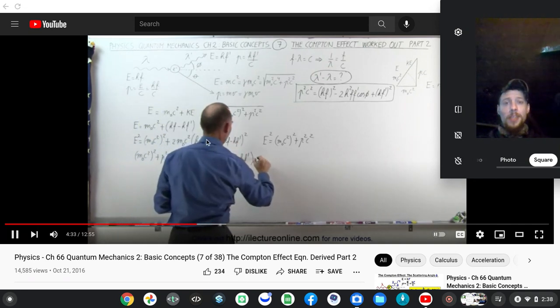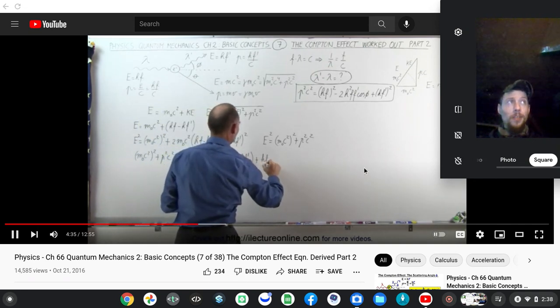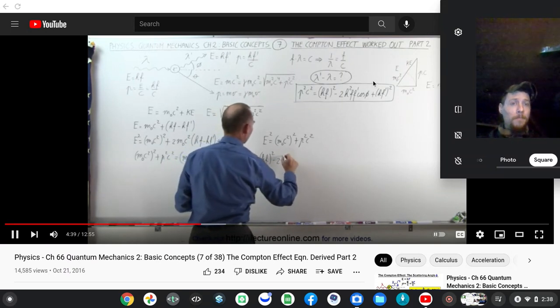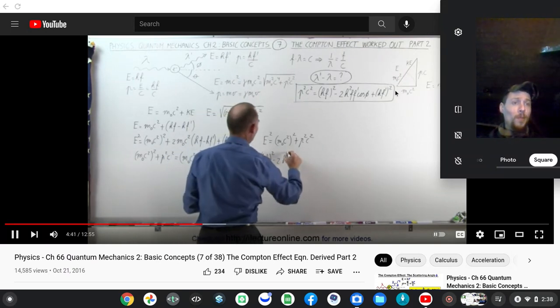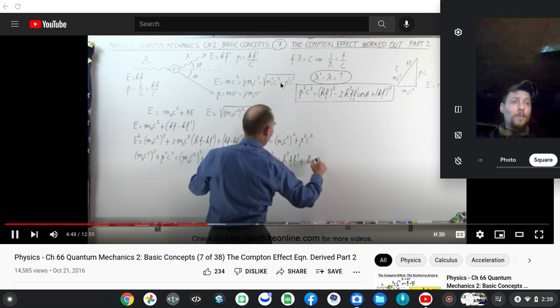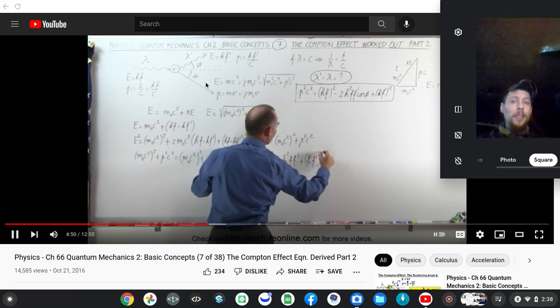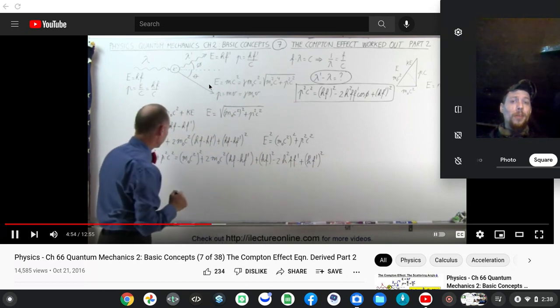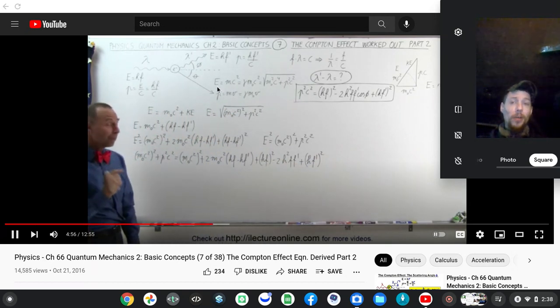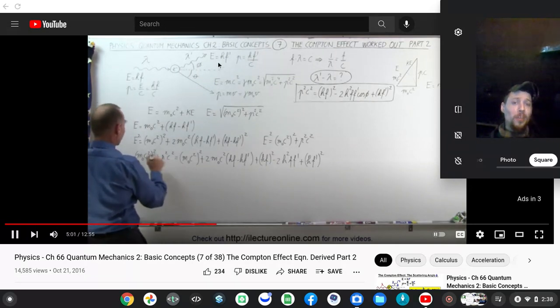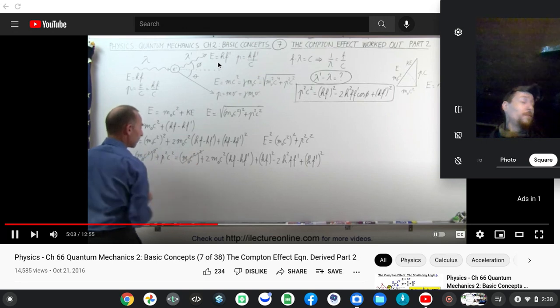So this term right here, and if we square this term, we get plus hf quantity squared minus two times the product of this term, which is h squared f f prime. So when we simplify, notice we have m sub naught c squared squared on both sides, and it cancels out.